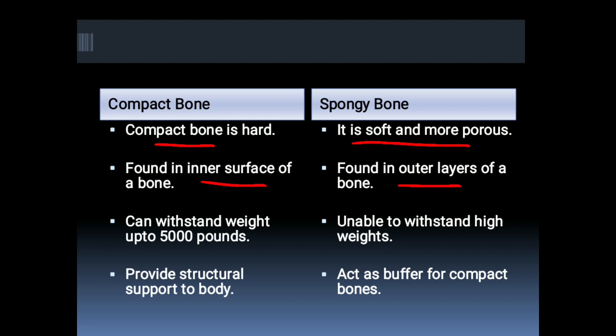Compact bone can withstand weight up to 5000 pounds, while spongy bone is unable to withstand high weight — it is not meant for weight bearing. Compact bone provides structural support to the body, while spongy bone acts as a buffer for the compact bone.